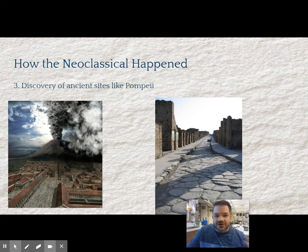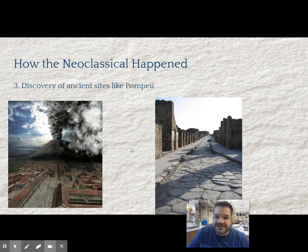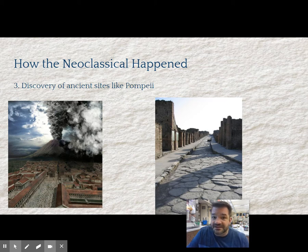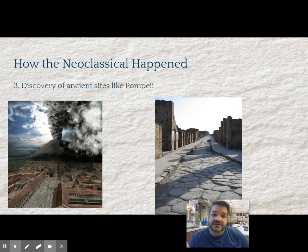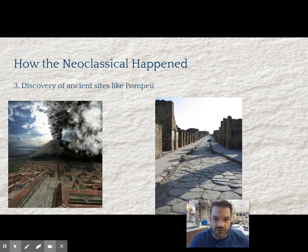Pompeii and Herculaneum are discovered during this time period, and they're going to uncover Roman frescoes — most of our understanding of Roman painting comes from Pompeii and Herculaneum. They exist because they were preserved by the ash of Pompeii. Statues, architecture, houses — all of these things that were obliterated during the Middle Ages were preserved by the volcano. So there is again this great interest: suddenly Roman and Greek things were very, very cool because of Pompeii.